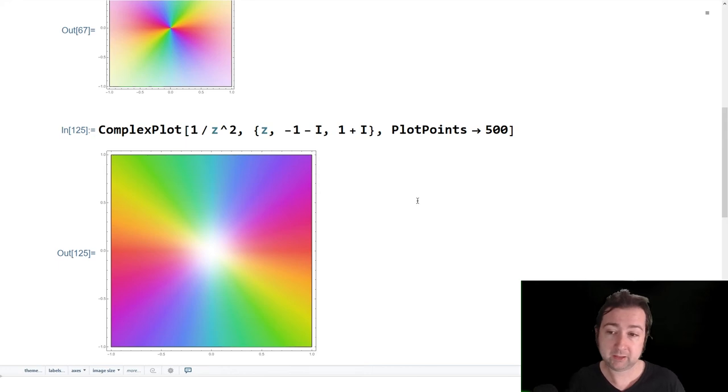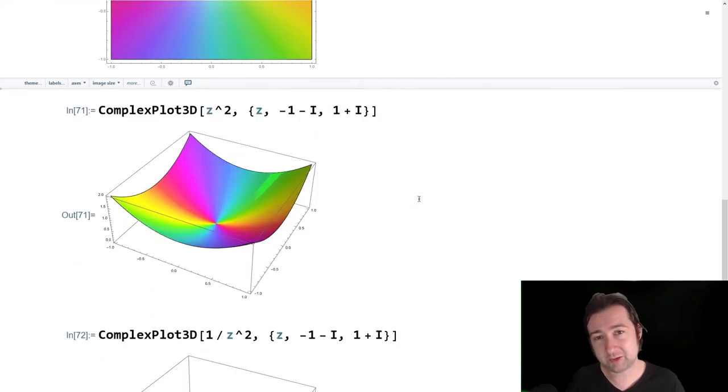One of the weaknesses of these type of arg plots or argument plots is that it doesn't tell us how the function is growing. We're using the human brain here in a way that we can plot four different pieces of information, but with only three physical dimensions. When we do something like complex plot 3d, what we're doing is we're treating the xy plane as the input variable x plus iy.